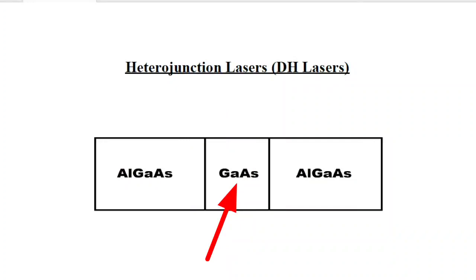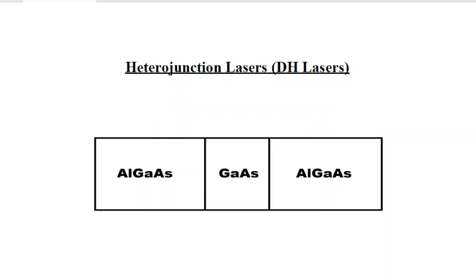The middle GaAs material has a lower bandgap and therefore a higher refractive index. The materials on the two sides — that is, AlGaAs — will have a lower refractive index because they have a higher bandgap. This makes the structure act like an optical waveguide, similar to optical fibers. Due to this change in refractive index, there will be total internal reflections at the interface.